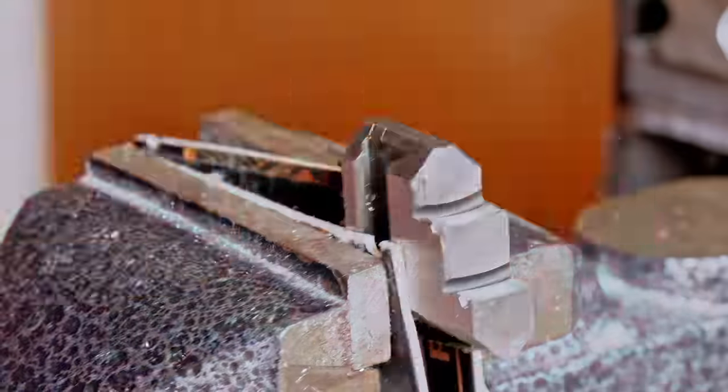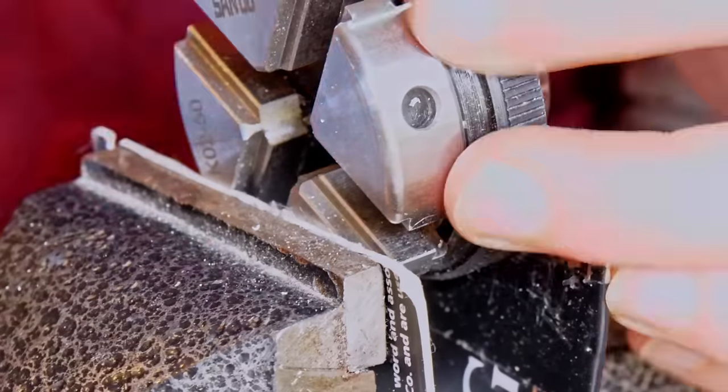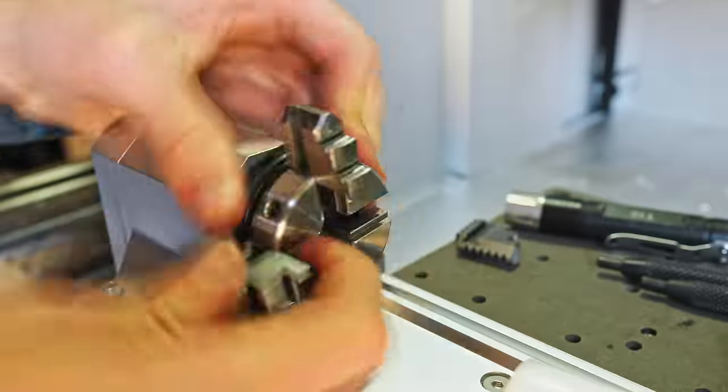One thing that is worth doing if you pick up one of these is taking it apart and deburring all of the sharp edges on the inside of the chuck jaws and the chuck itself. This just means that it will run much more freely. This is a pretty standard thing that you have to do with pretty much any new chuck that you buy anyway.